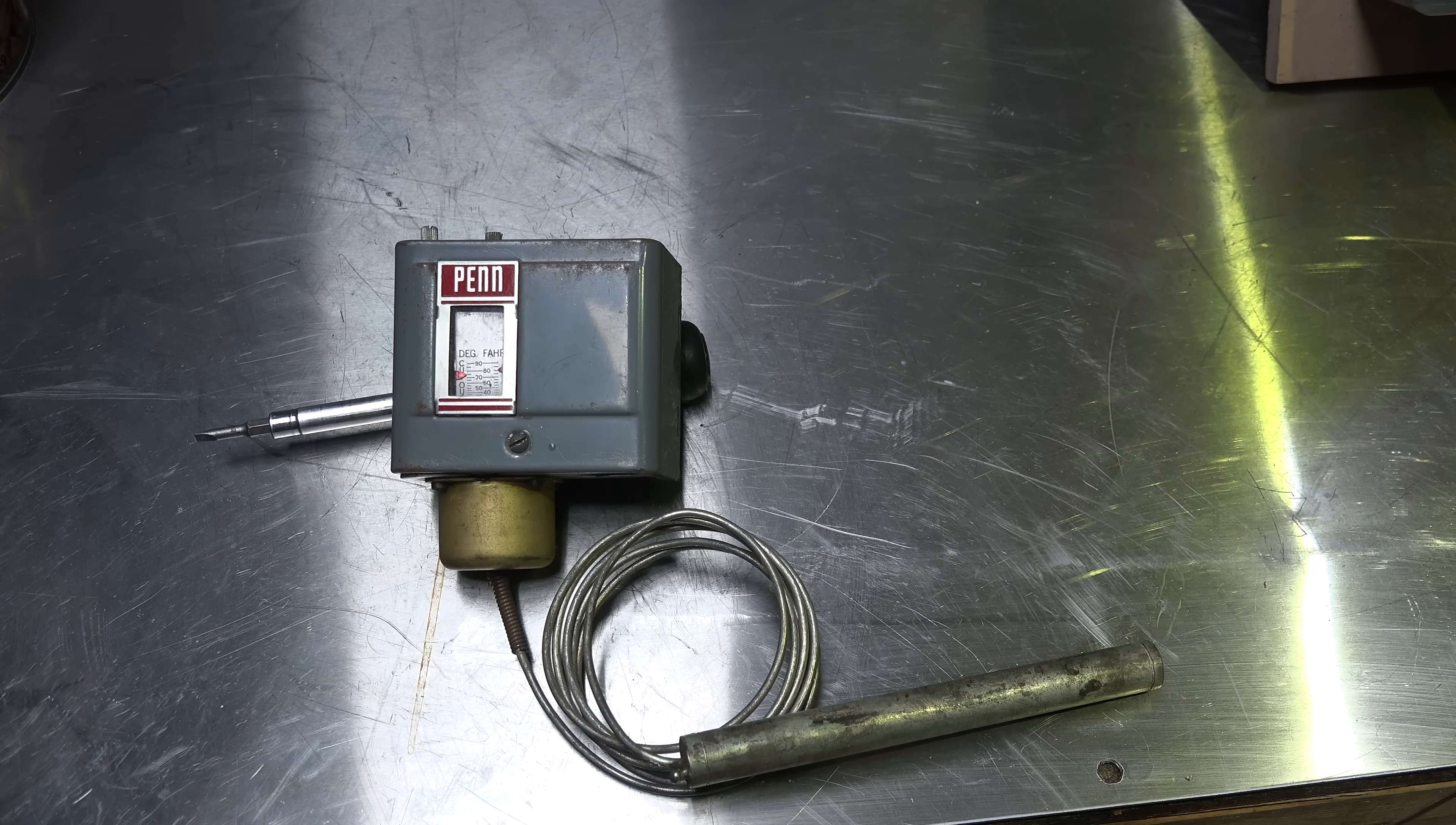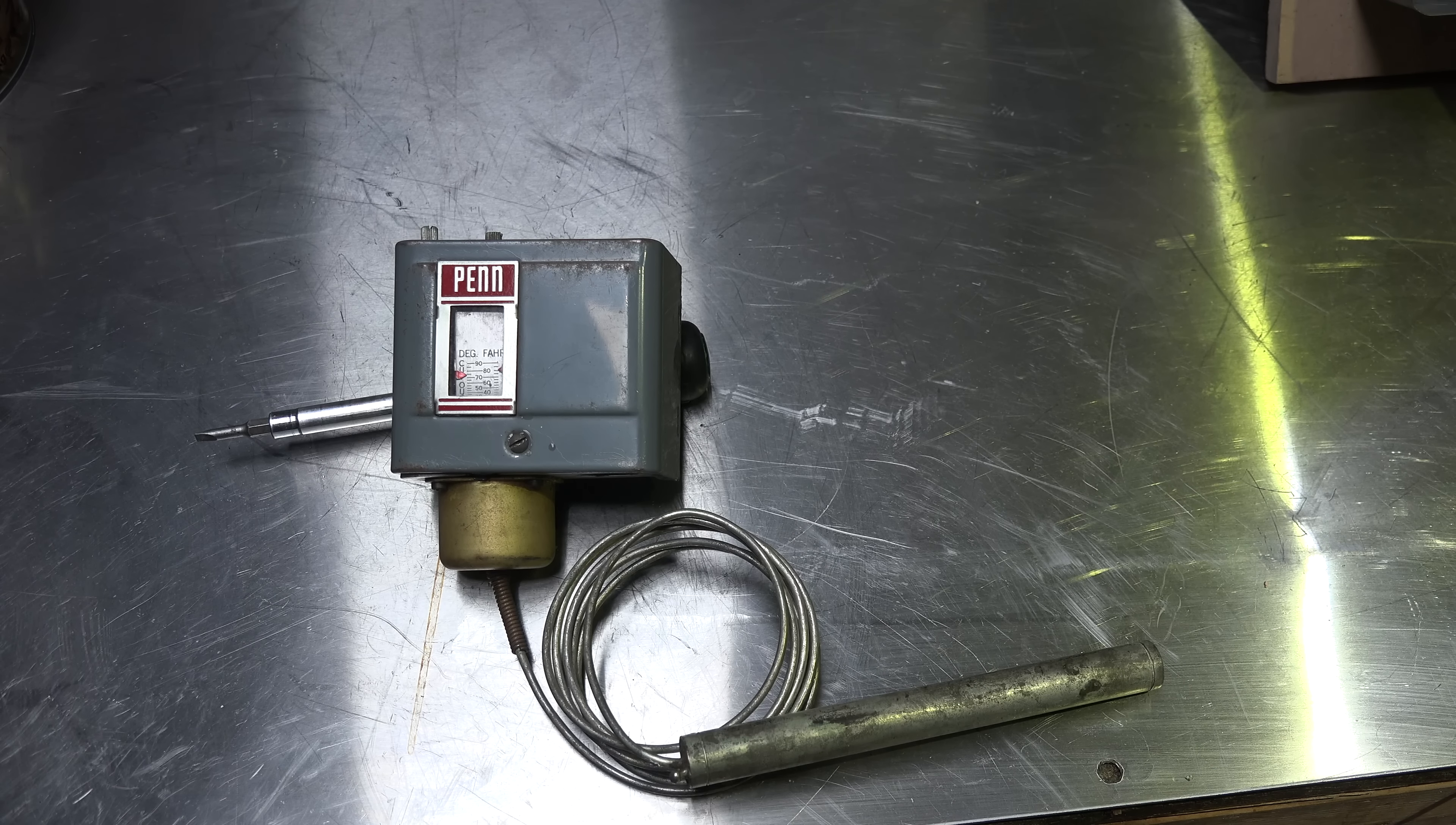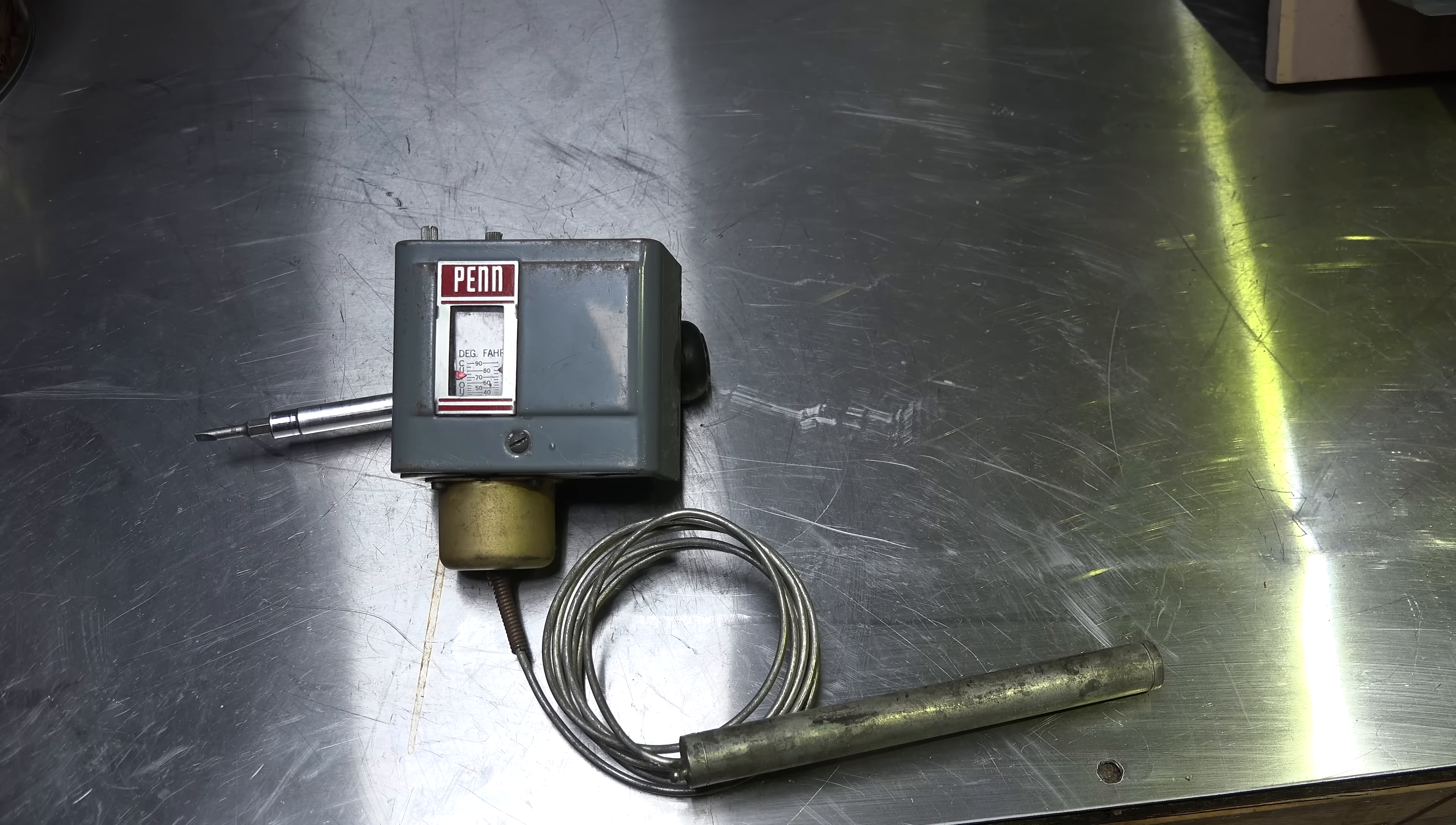This one is about how the old mechanical bulb thermostats worked. Now this thing is one antique and a half. It's actually new old stock, if you could call such a beast for HVAC. I don't think it's ever been installed, but it's been laying around forever. It says it's Penn, which Johnson Controls bought about a million years ago, so it's a very old control.